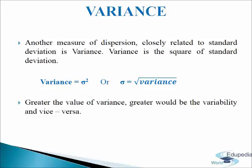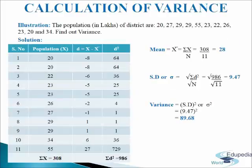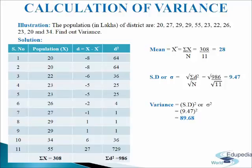Let us understand this with the help of a following illustration. The population in lakhs of districts are given to us and we have to find out variance. We will make a table of four columns. In the first column we will write serial numbers 1 through 11. In the second column we will write population, denoted by letter X, arranged in ascending order: 20, 20, 22, 23, 23, 26, 27, 29, 29, 34 and 55.